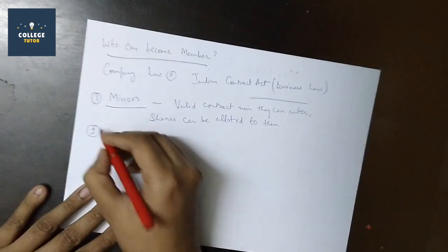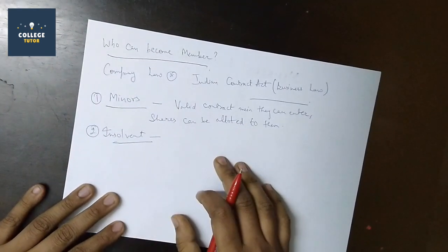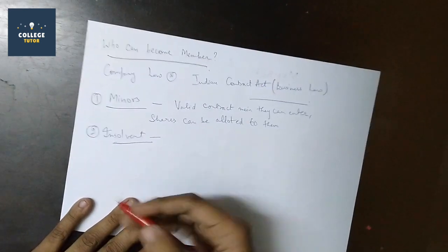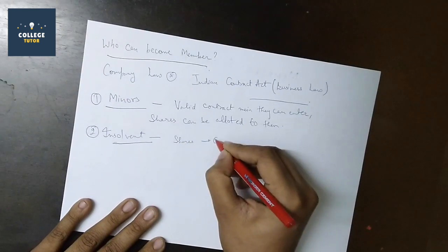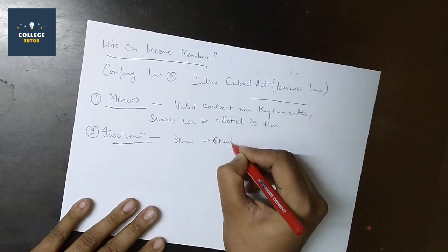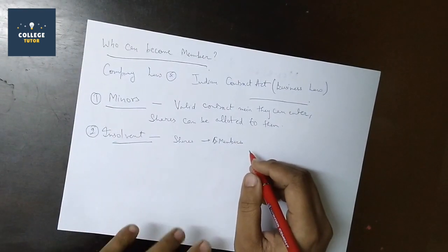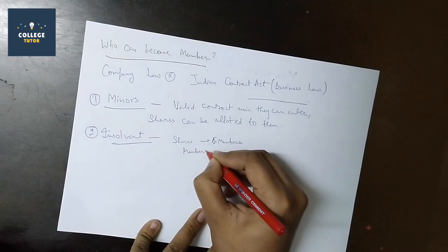The next one is insolvent. Minors will not be allowed shares to be allotted. Insolvent may be possible that they have shares initially and can be company members, but ultimately when they become insolvent and there's a capital call on shares, their membership will be cancelled.